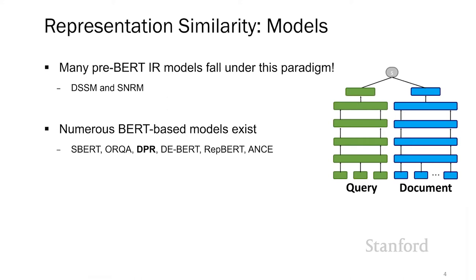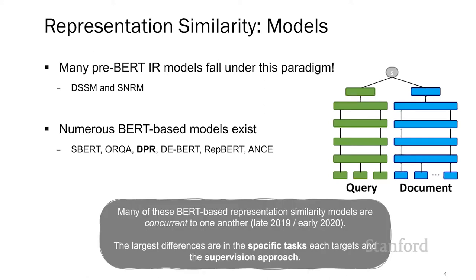For the last year and a half, we've seen numerous similarity models based on BERT for IR tasks, including SBERT, ORCA, DPERT, and ANSI, among others. Many of these models were proposed concurrently with each other, and their primary differences lie in the specific tasks that each one targets and the supervision approach each one suggests.